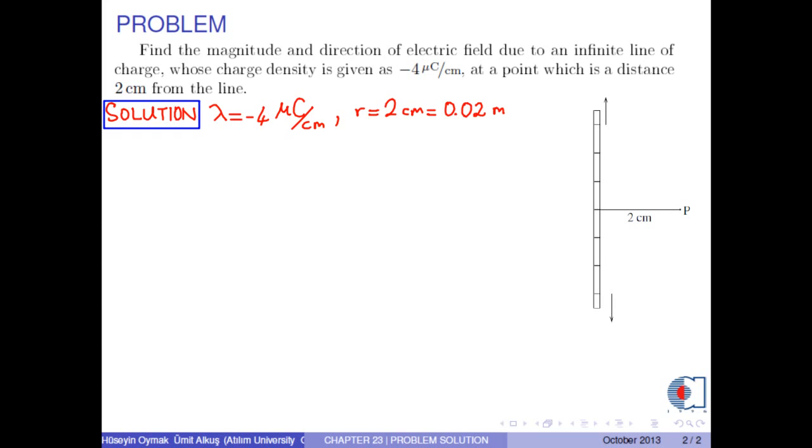If you remember from the lectures, the electric field due to an infinite line of charge is calculated as lambda over 2 pi epsilon 0 r times r hat, where r hat is the radial outward unit vector.